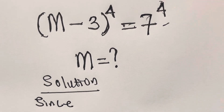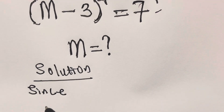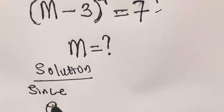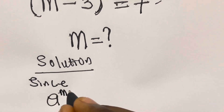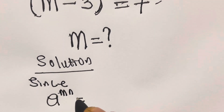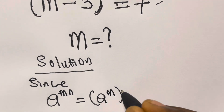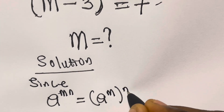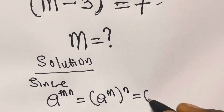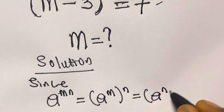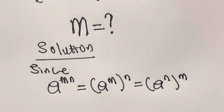When we have a raised to power m times n, it equals a raised to power m, raised to power n, which is the same as a raised to power n multiplied by m.